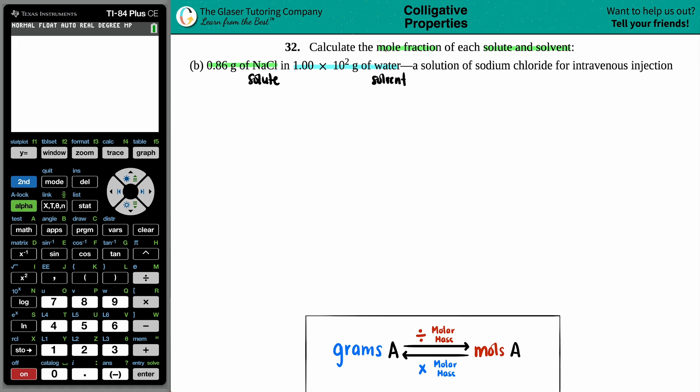So we just have to find out the mole fraction for both NaCl and the water. We know that water is the chemical formula H2O. What is a mole fraction? It's this formula right here. A mole fraction, just like any other fraction, is always a part divided by a whole or a total amount.